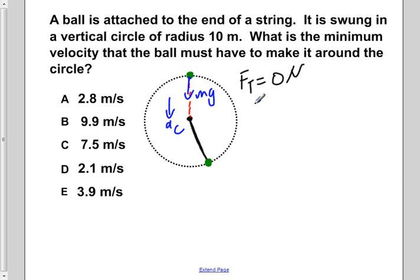If we apply Newton's second law, we have the net force is equal to ma centripetal. The sum of our forces would be the force of tension plus mg is equal to ma centripetal. This is if we consider down to be the positive direction.